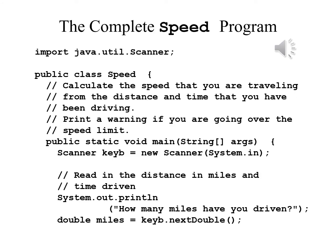We start by writing import java.util.Scanner as always, and we have a header for the file: public class Speed, with a comment telling us what it does — calculate the speed from the distance and time driven and print a warning if over the speed limit. We have the header for the main method: public static void main, with String[] args in parentheses, and an open brace to begin the main method.